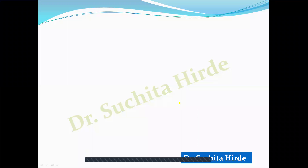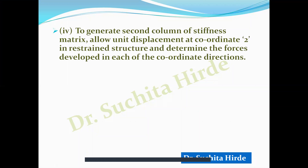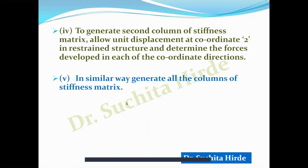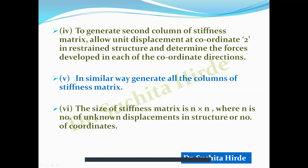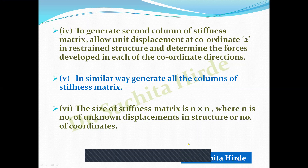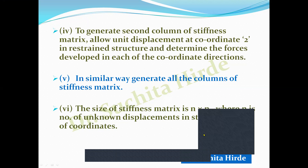We develop the stiffness matrix column by column. After developing the first column, to generate the second column we allow unit displacement at coordinate 2 in the restrained structure and determine forces developed in each coordinate direction. In a similar way we generate all columns. The size of the stiffness matrix is n×n, where n is the number of unknown displacements or the number of coordinates in the structure.